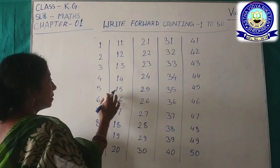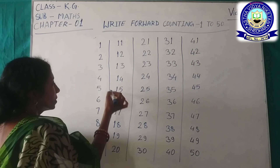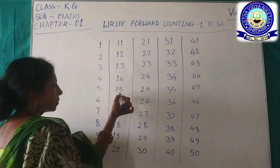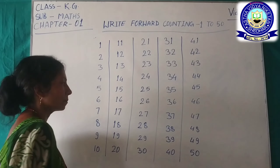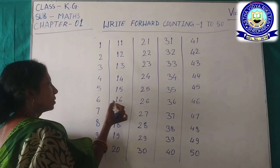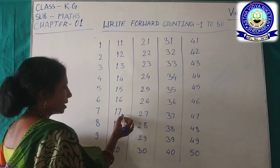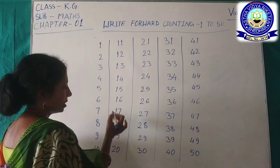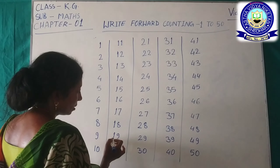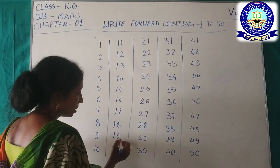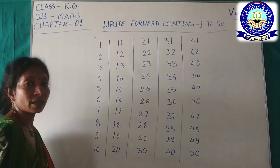One, five — fifty. This one is five, fifty. One, six — sixteen. One, seven — seventeen. One, eight — eighteen. One, nine — nineteen. Two, zero — twenty.